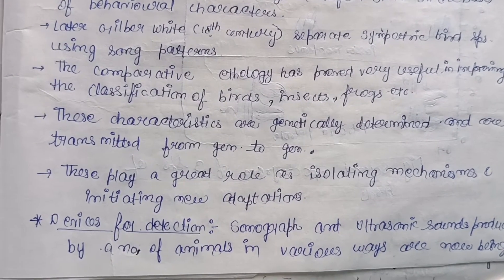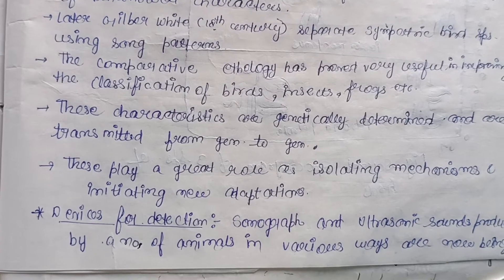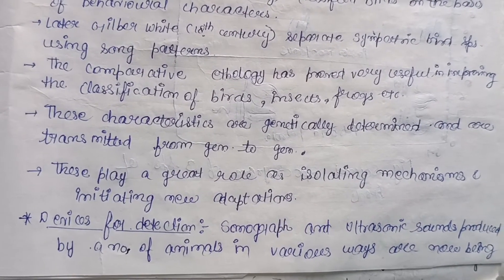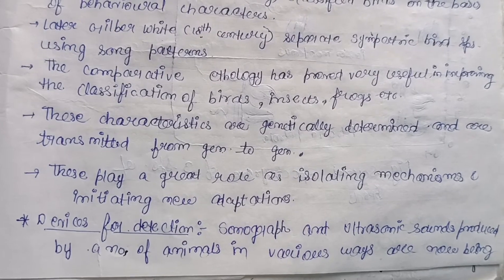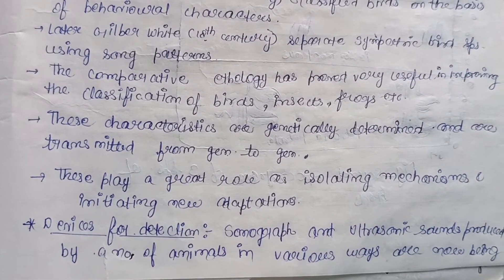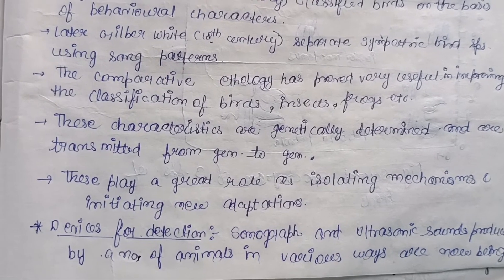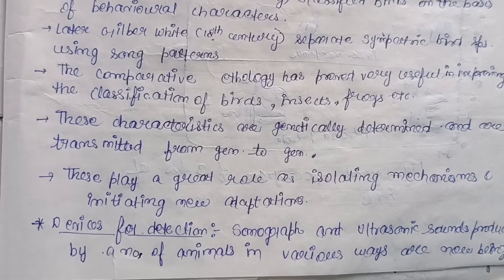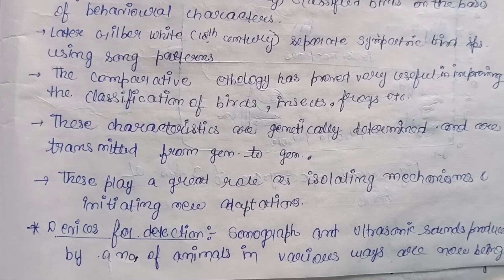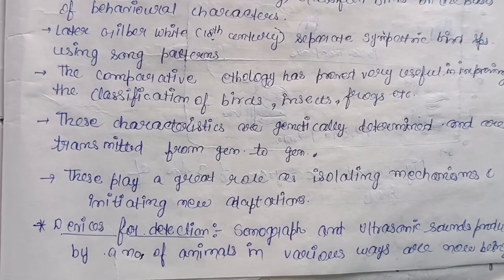Ethology is a branch of biology which deals with the scientific study of animal behavior. Comparative ethology has proved very useful in improving the classification of birds, insects, frogs, etc., as these have a very large variety of species, making it hard to separate and identify them.